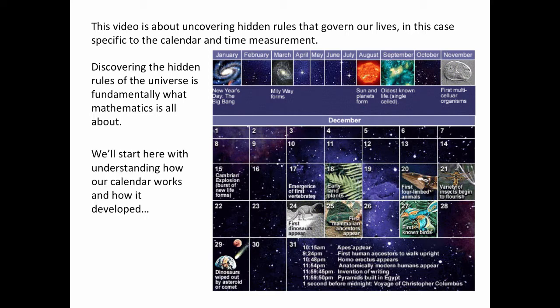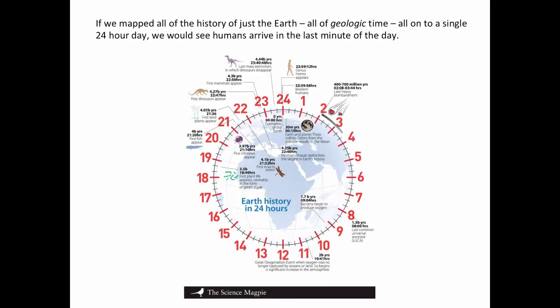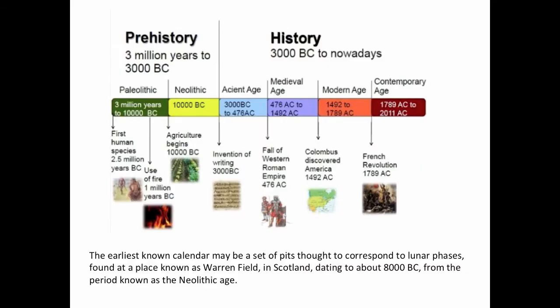We'll start here with understanding how the calendar works and how it developed, sometime in the last second of the cosmic calendar. If we mapped all of the history of just the Earth — all of geologic time — onto a single 24-hour day, we would see humans arrive in the last minute of that day. The earliest known calendar may be a set of pits thought to correspond to lunar phases, found at a place known as Warren Field in Scotland, dating to about 8000 BC, from the period known as the Neolithic Age.